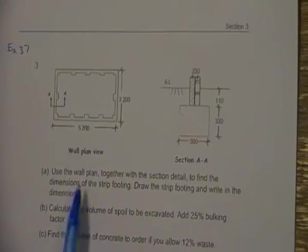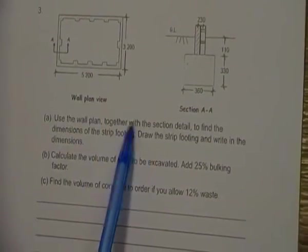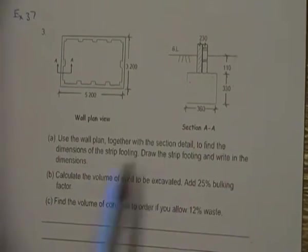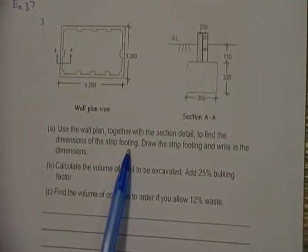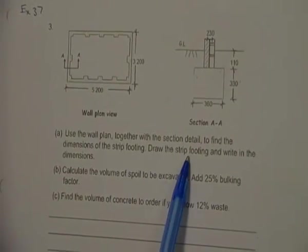We're going to use the wall plan and together with the section detail, we're going to find the new dimensions of the strip footing. Draw the strip footing and write in the dimensions.